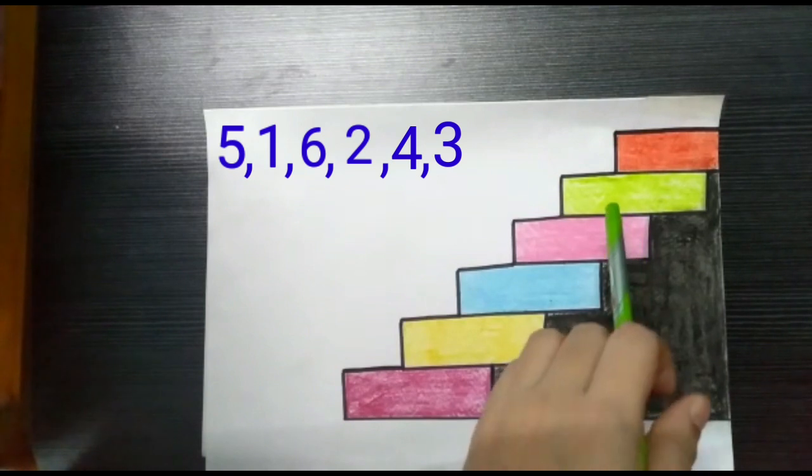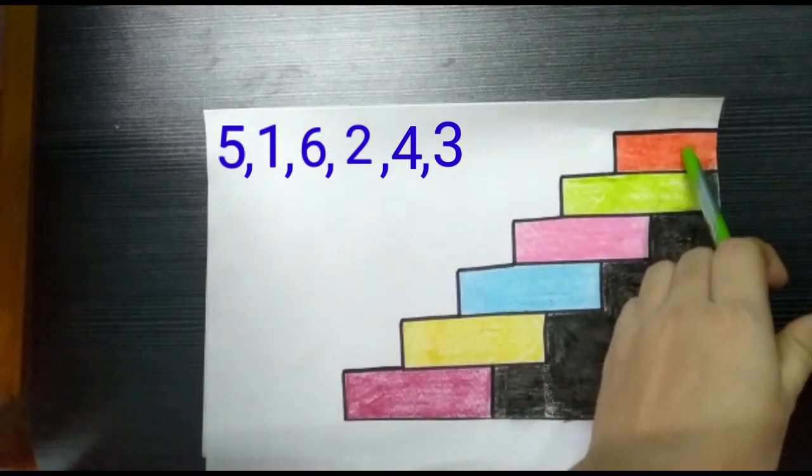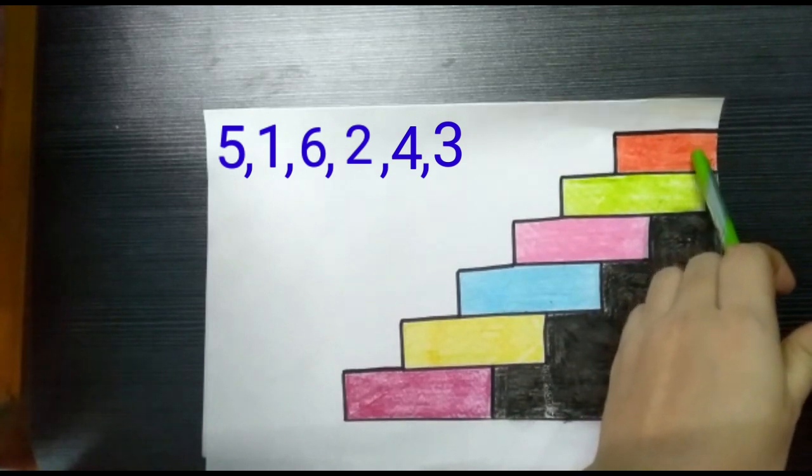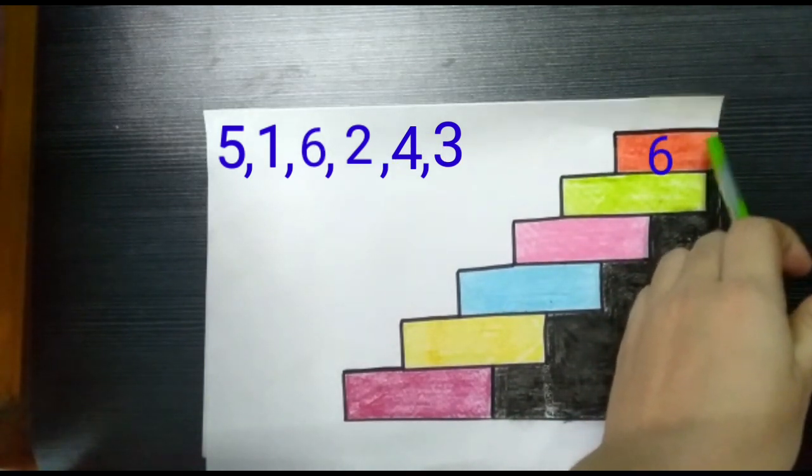In descending order, we always start with the big number. So, let's start from the upstairs, which is at the highest point. The orange stair is number 6.